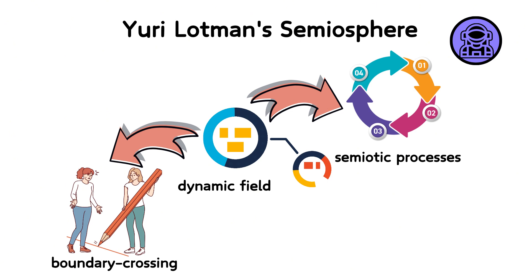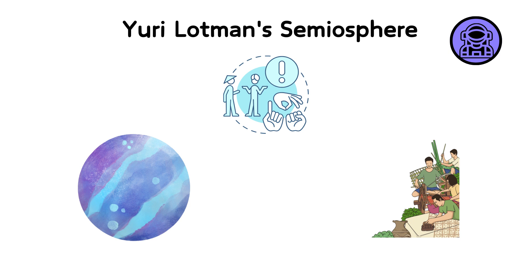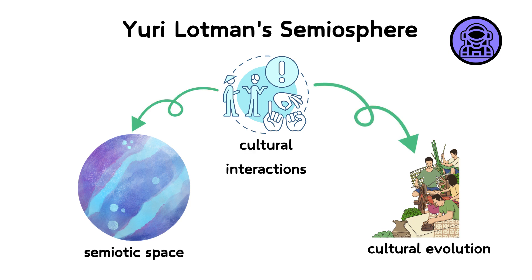This space is characterized by its boundary-crossing nature, where internal and external structures of culture meet and engage. The semiosphere is divided into the core, where more stable and homogeneous meanings reside, and the periphery, where meanings are more diverse, often leading to innovative semiotic creation. Lotman's theory is profound in how it conceptualizes cultural interactions. By viewing culture through the lens of a semiosphere, we see how meanings and information are not merely transmitted but actively created through interactions within this semiotic space. This model helps explain cultural evolution and change, as new meanings and understandings emerge at the borders of different cultural systems within the semiosphere.